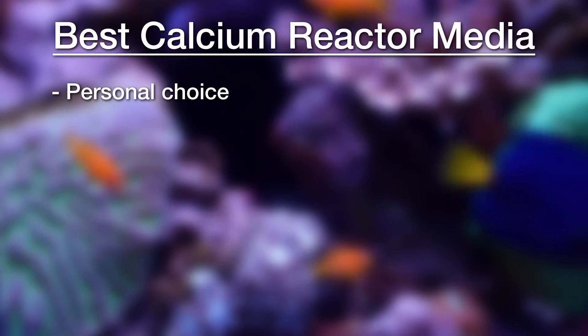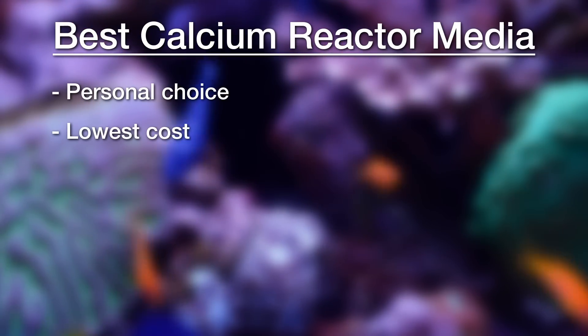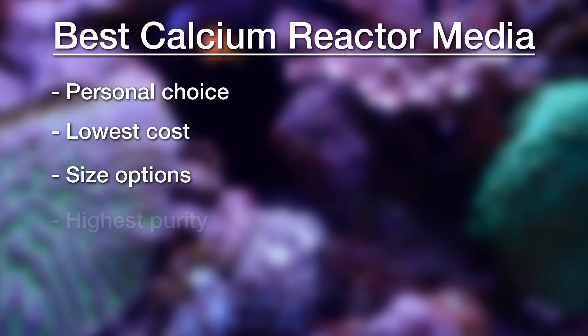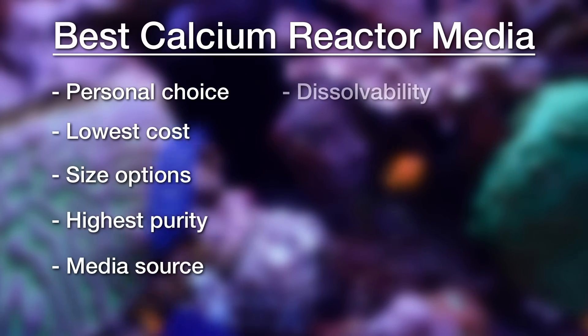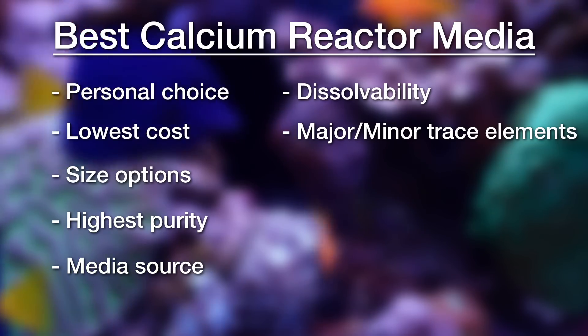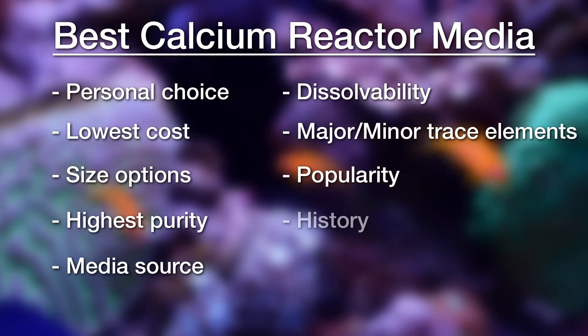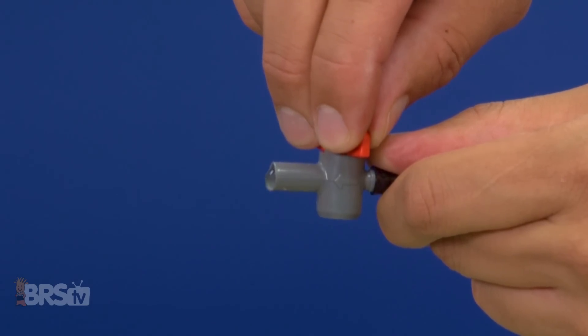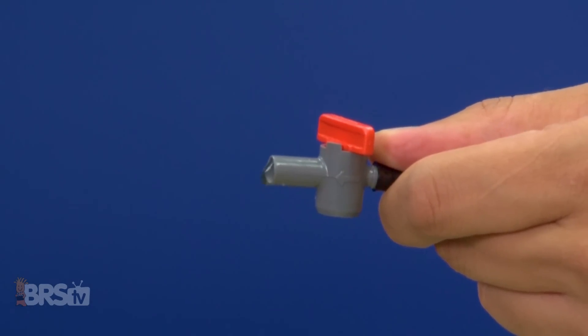When it comes to choosing the best calcium reactor media for an individual's personal desires, perhaps a decision could be made on the lowest cost, size options, highest purity or where the media was sourced from, dissolvability, amount of major, minor, and trace elements they provide, or even just by popularity and longest history of users overall. There's definitely more information we can learn about the various calcium reactor medias, and to start peeling back the layers of the onion, we hope to first determine how the most popular options perform on the most basic level — the max saturation or concentration level they produce at similar pH set points. Armed with this information, we can begin to get a clearer picture into choosing the right tool for the job.